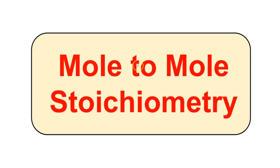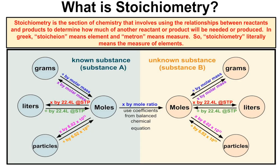Hey, you guys, this is Mr. Millings, and in this video we are gonna learn how to do some mole-to-mole stoichiometry problems. Stoichiometry is the section of chemistry that involves using the relationships between reactants and products to determine how much of another reactant or product will be needed or produced. In Greek, stoicheion means element and metron means measure, so literally stoichiometry means the measurement of elements.